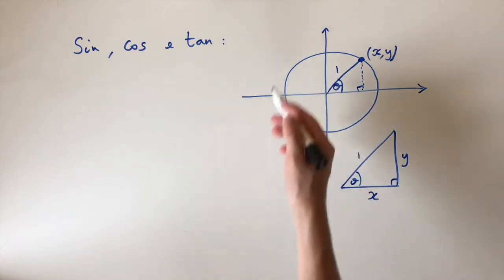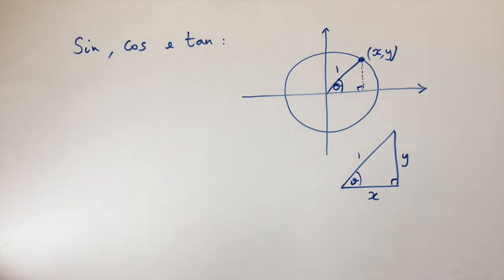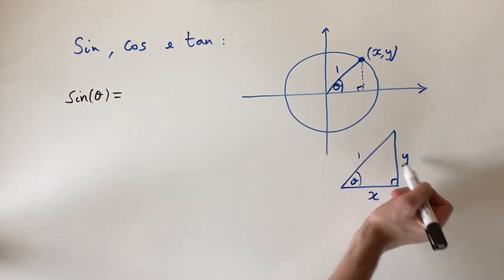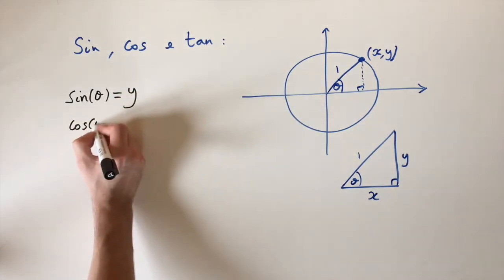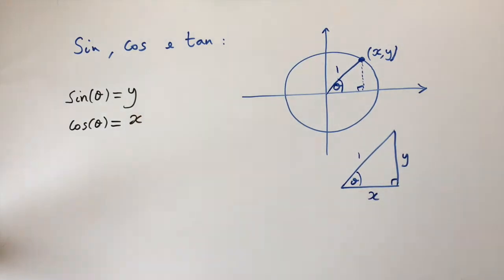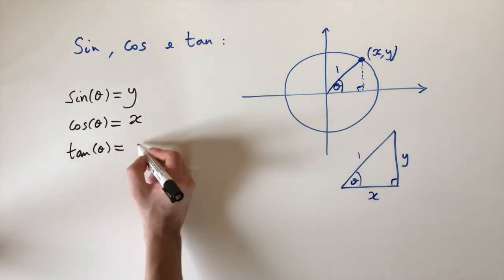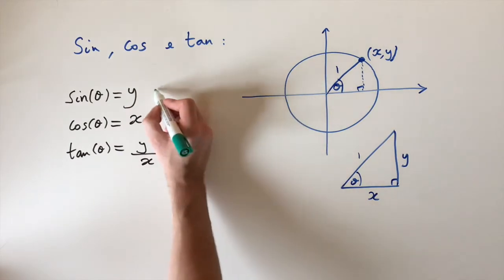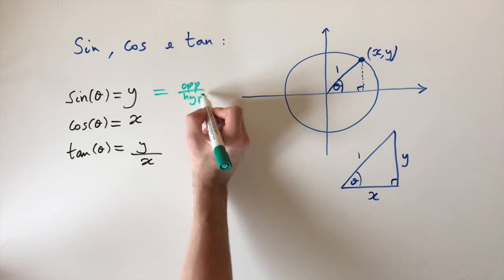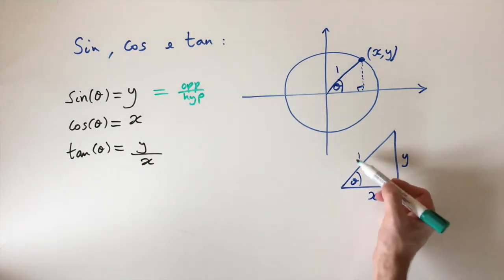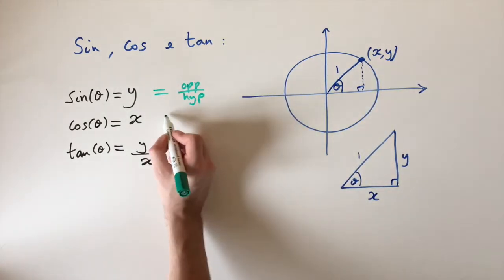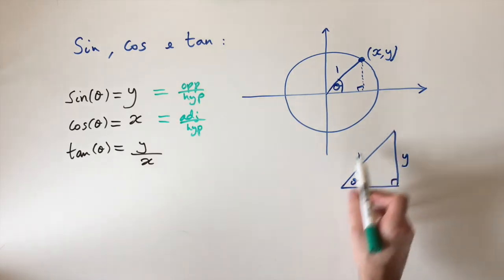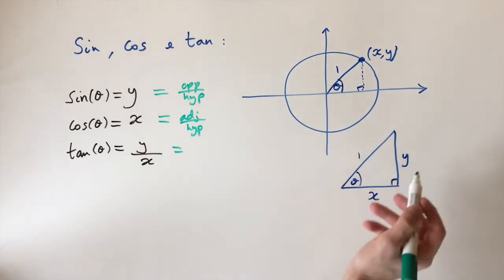The issue with SOH-CAH-TOA is it doesn't account for negative values, since a triangle always has positive lengths. But working in the circle we can have negative coordinates. So the definitions are: sine of theta equals the vertical height y; cosine of theta equals the horizontal distance x; and tan of theta equals y divided by x. This agrees with SOH-CAH-TOA because the opposite is y, the hypotenuse is 1, so y/1 = y. Similarly, adjacent is x and hypotenuse is 1, so x/1 = x. And tan is opposite over adjacent, which is y/x.